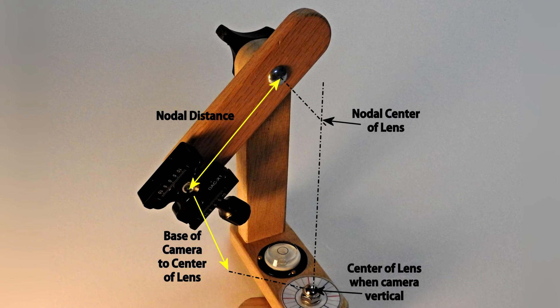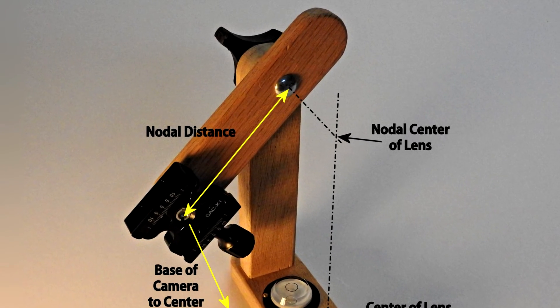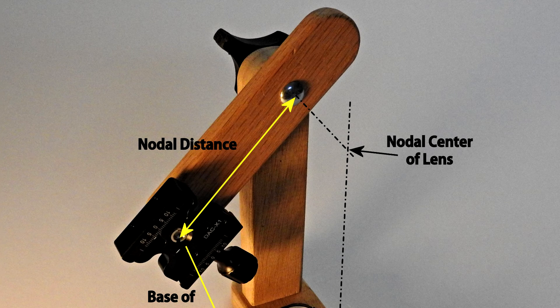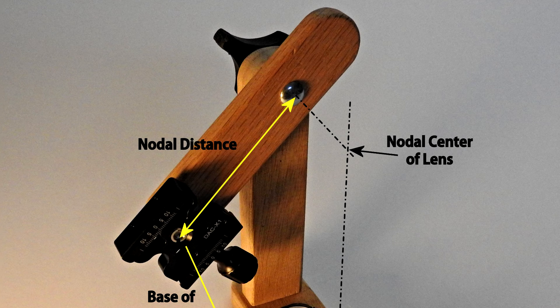Once you have everything assembled and your camera is mounted, when you rotate either vertically or horizontally, the camera lens will rotate around the nodal center of the lens. This eliminates parallax and allows you to stitch panoramic images together much more easily.